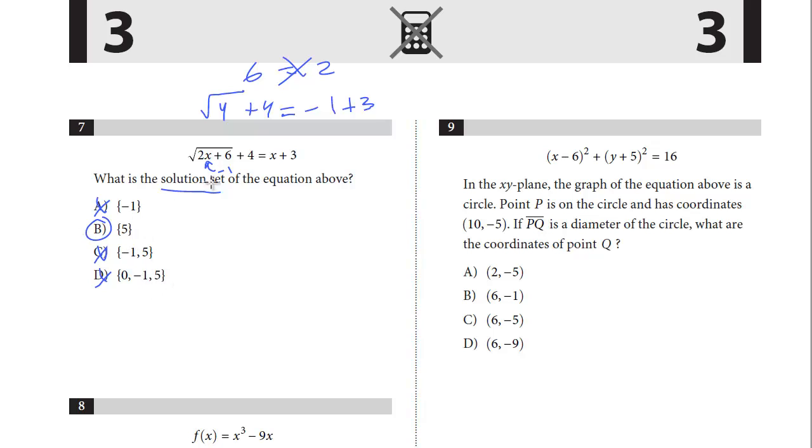Let's just try 5 to double check. So 5 times 2 is 10 plus 6. That's the square root of 16 plus 4 equals 5 plus 3. That's 8. And you see 4 plus 4 does equal 8. Just a better way, I think, of solving that problem.